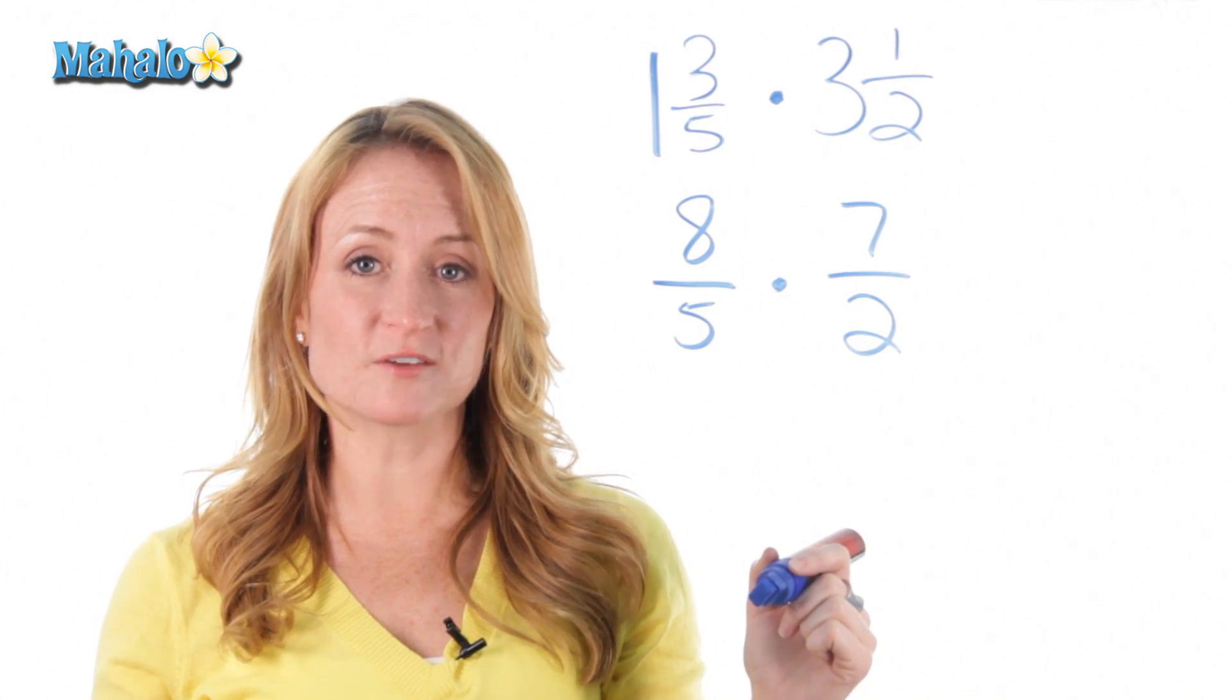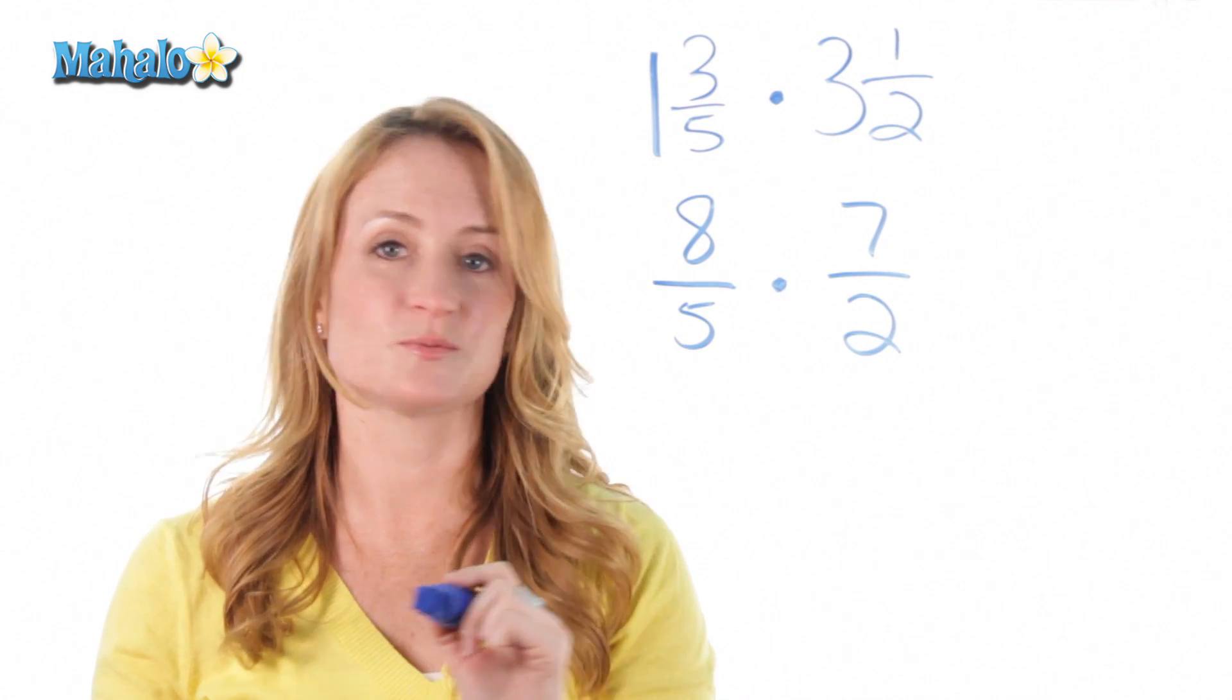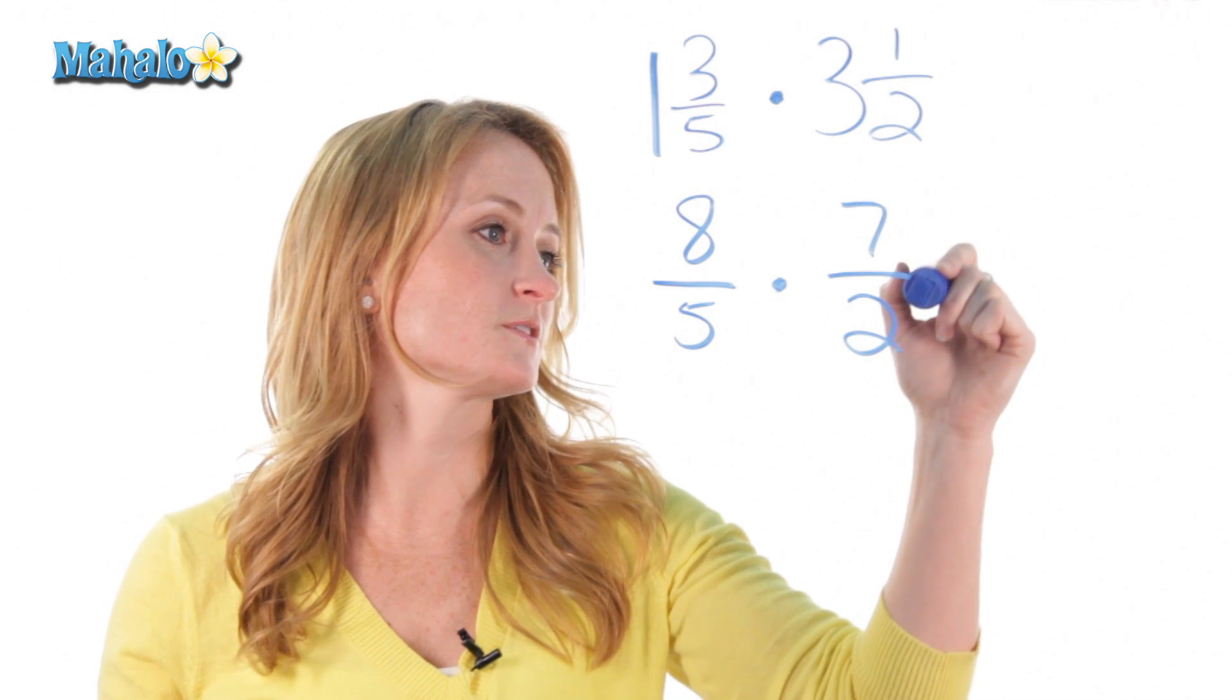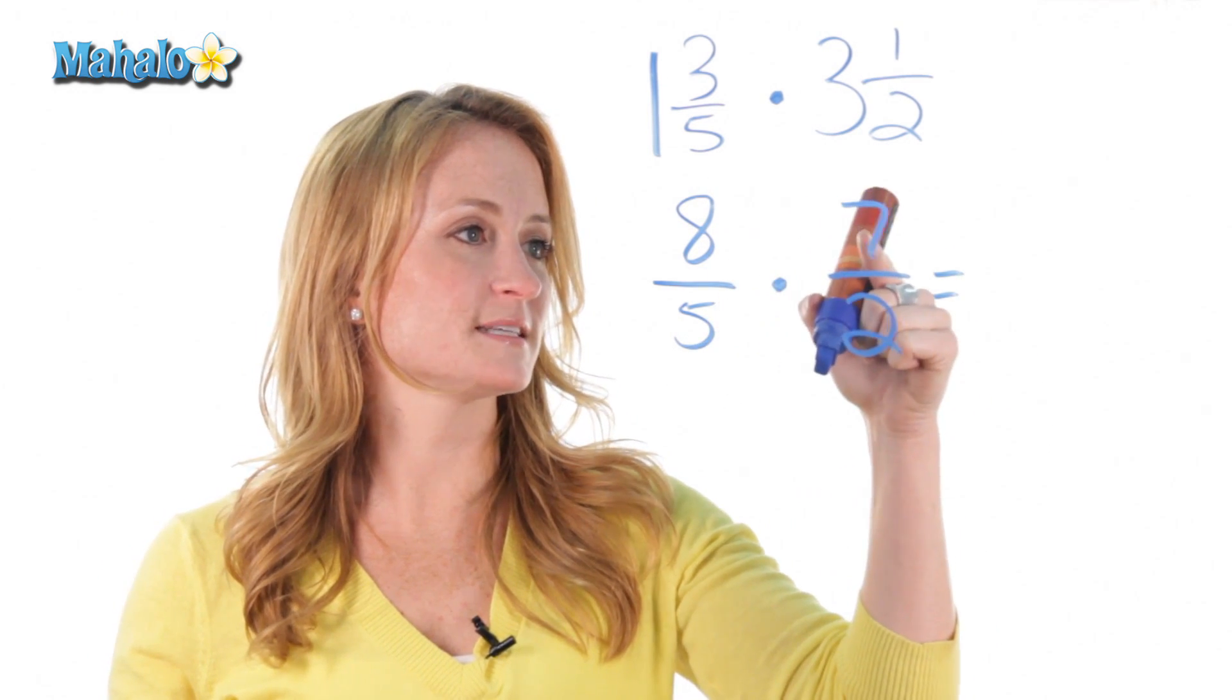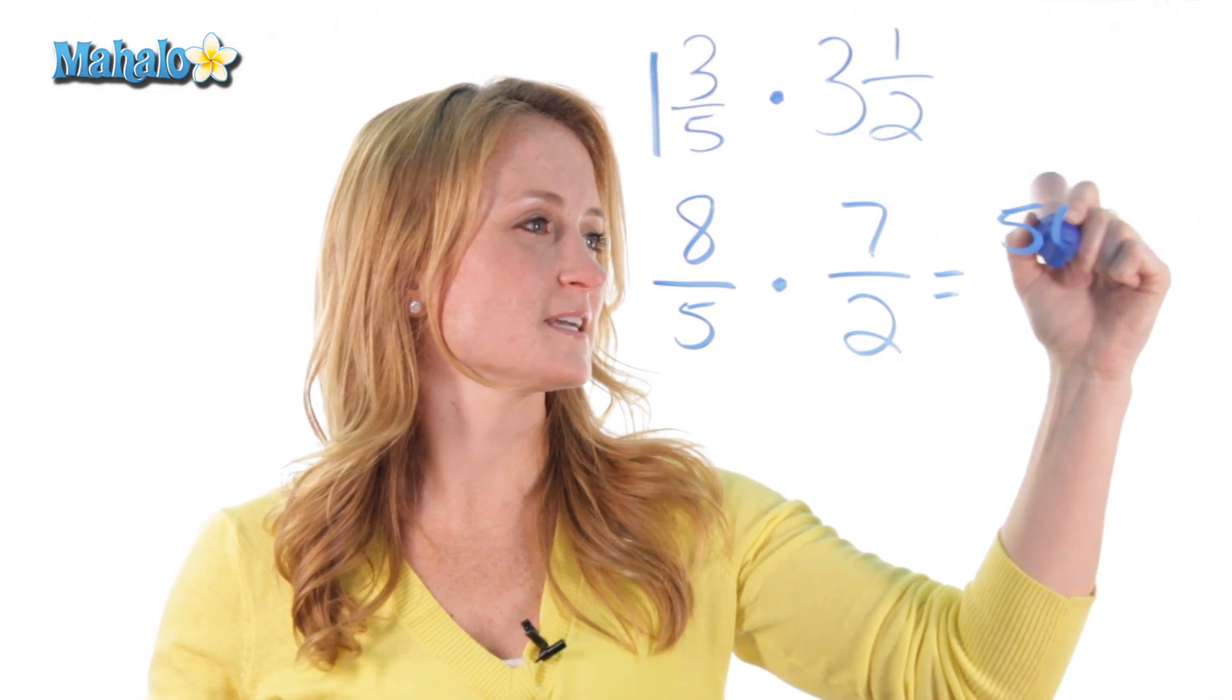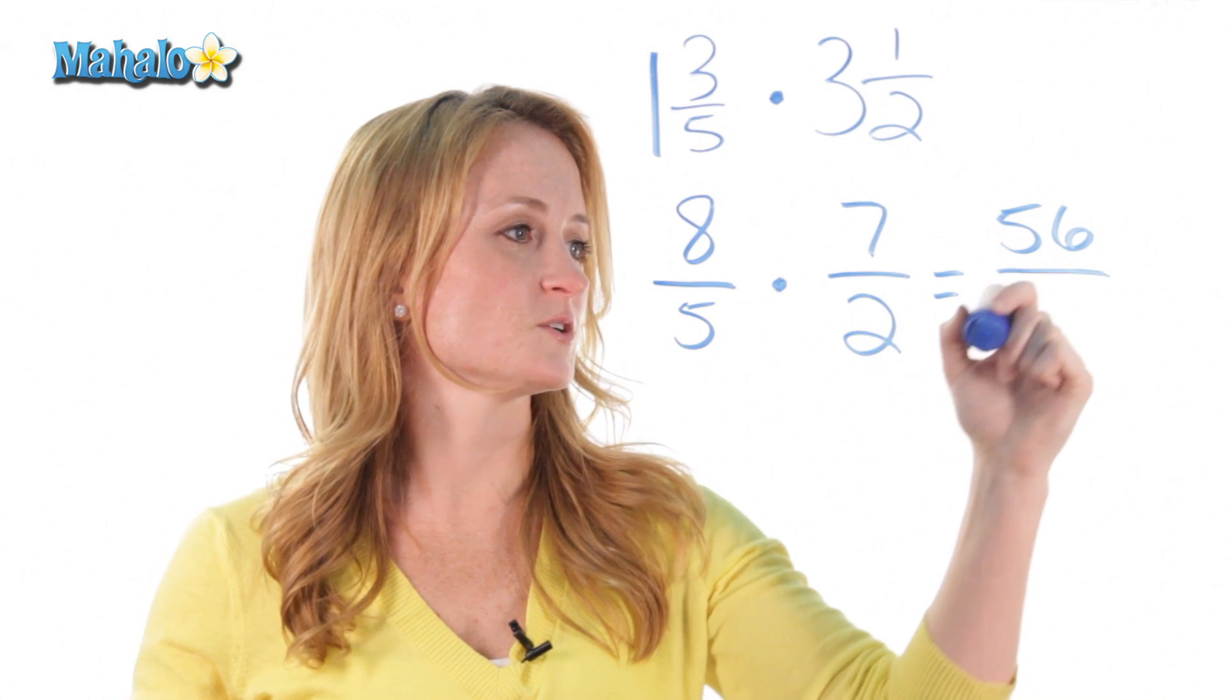And we know the rules for multiplying fractions are simple. You just multiply straight across and then reduce. So here, 8 times 7 is 56 and 5 times 2 is 10.